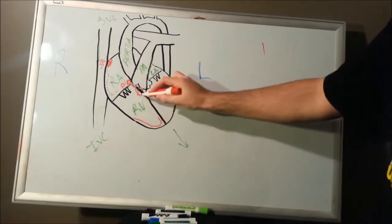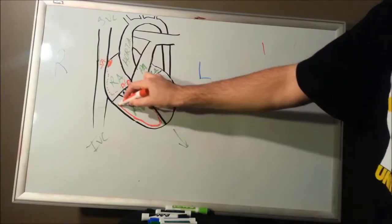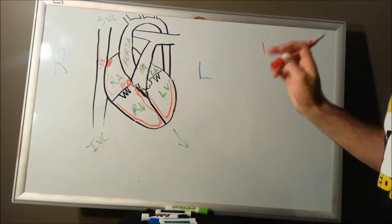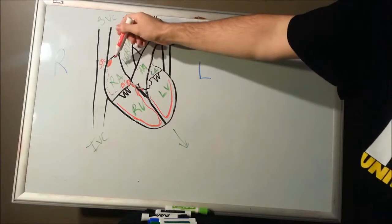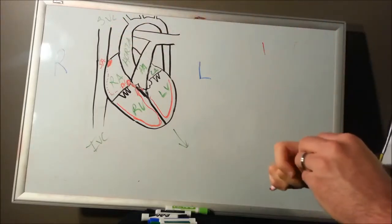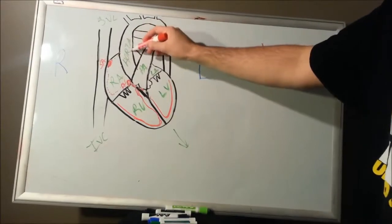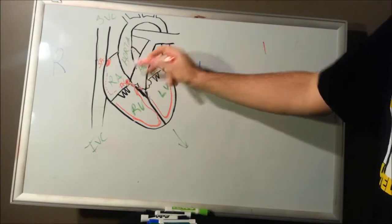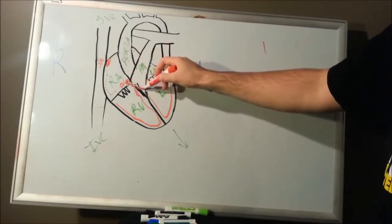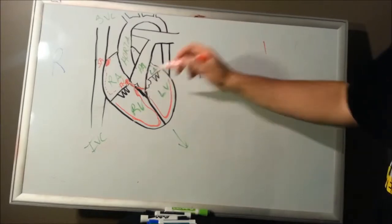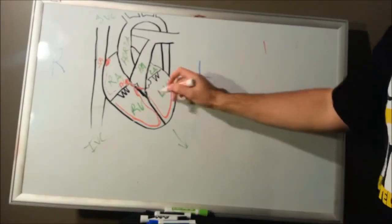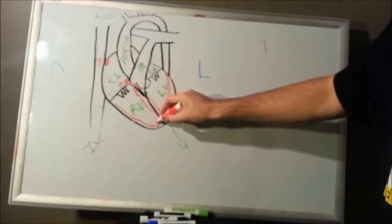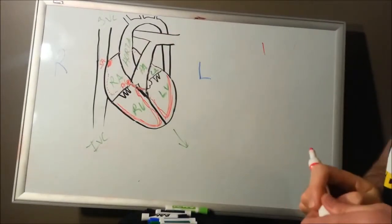Your right bundle branch is going to eventually end up on the right side of your right ventricle, and likewise, your left bundle branch is going to end up in your left ventricle. So the action potential starts up in your sinoatrial node, goes down through the atria, through the left atria as well, ends up in your AV node. From your AV node, it goes through the bundle of His into your left and your right bundle branches, and from there it's going to go into your Purkinje system — that's the system that reaches all out through the ventricles.